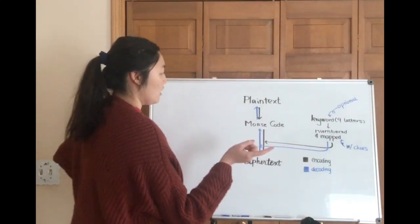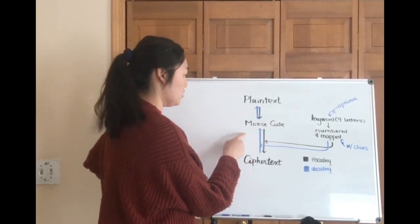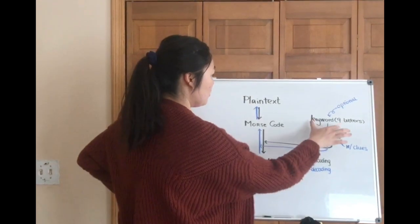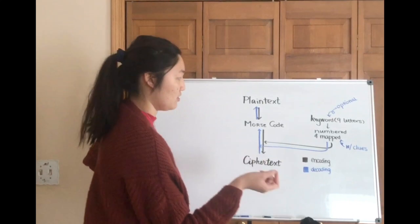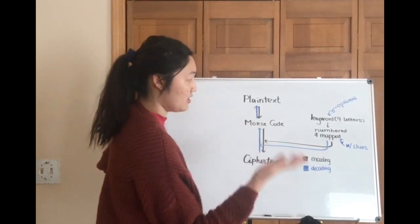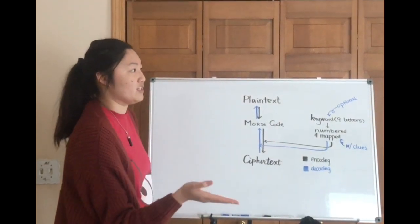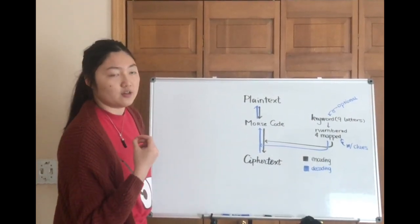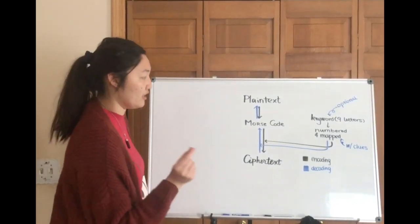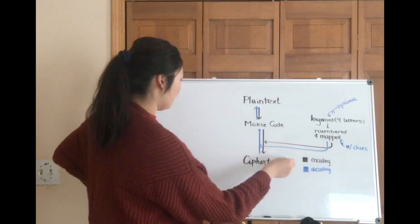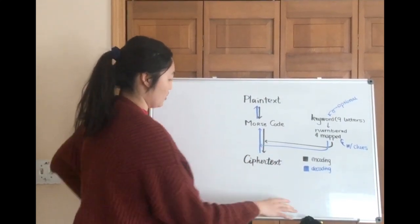So let's start with the encoding process. If you have a plaintext, you are going to first transfer that into Morse code and then you will also be given usually a nine letter keyword. What you're going to do is you're going to number the letters in the keyword and they're going to be mapped onto different dots, dashes or x's denoting the separation between letters or words which we'll get into later. And then you're going to use that to transfer the Morse code into a series of numbers which is the ciphertext.